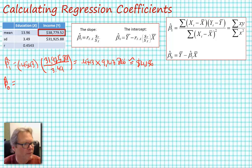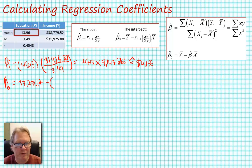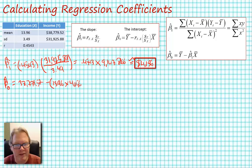Now we're going to plug in the mean of y, which in this case is $38,779.52, minus the mean of education, 13.96, times our beta hat sub 1, which is $4,156. I'm rounding here, but I didn't round when I did the calculation, which is equal to